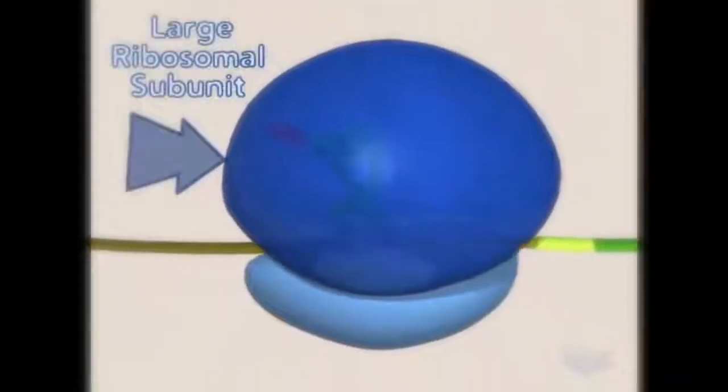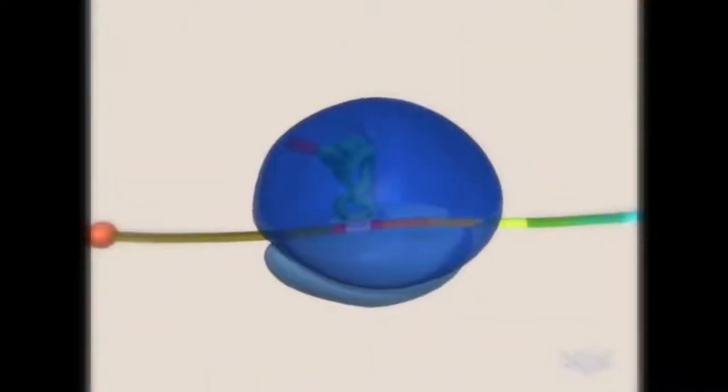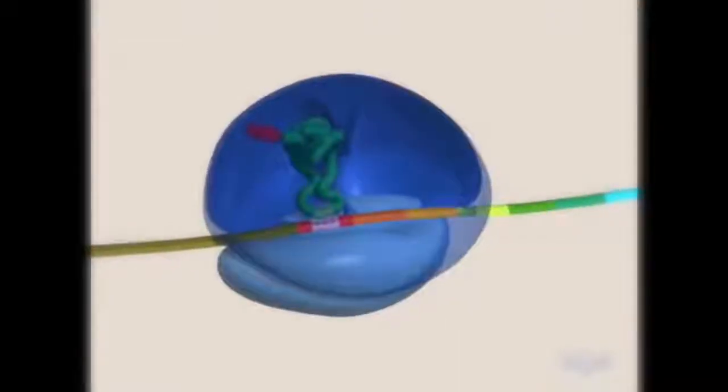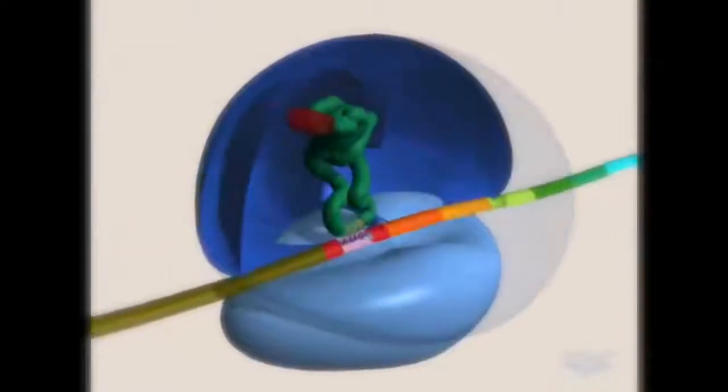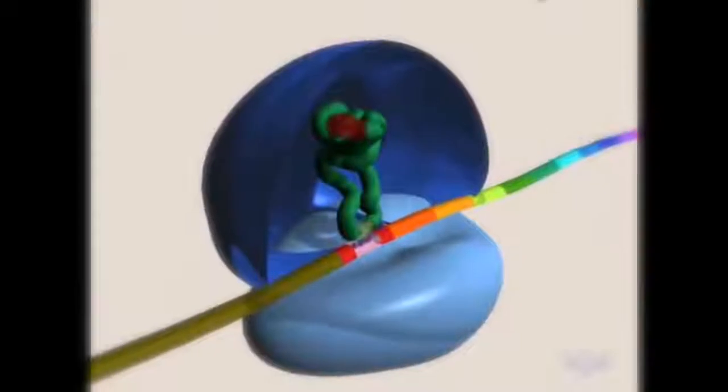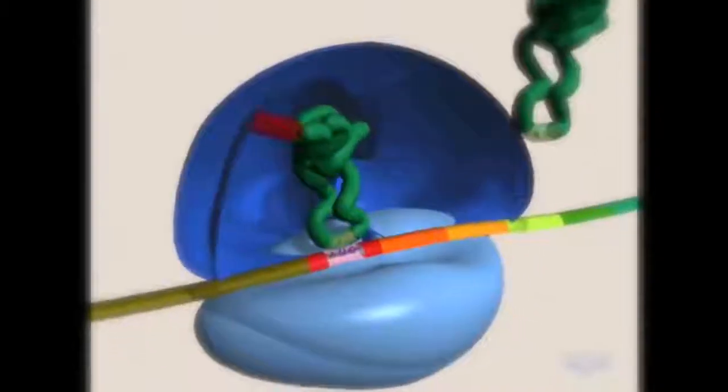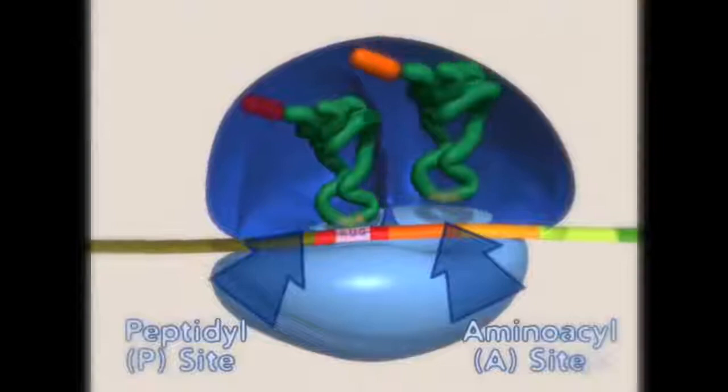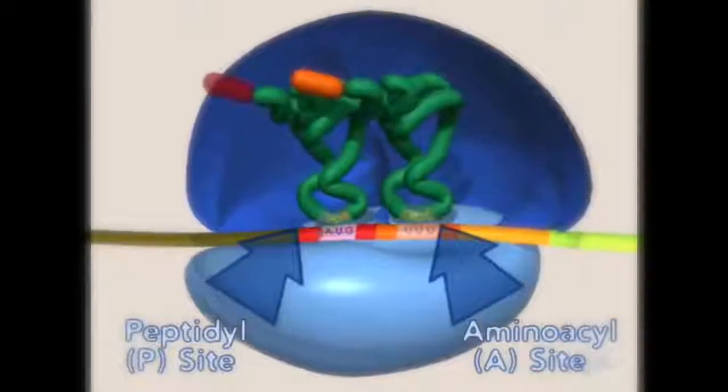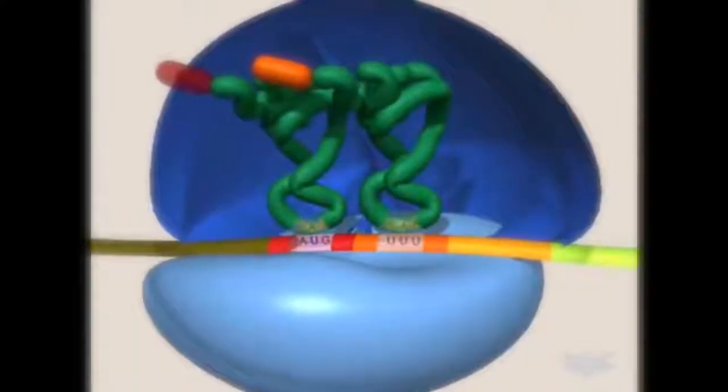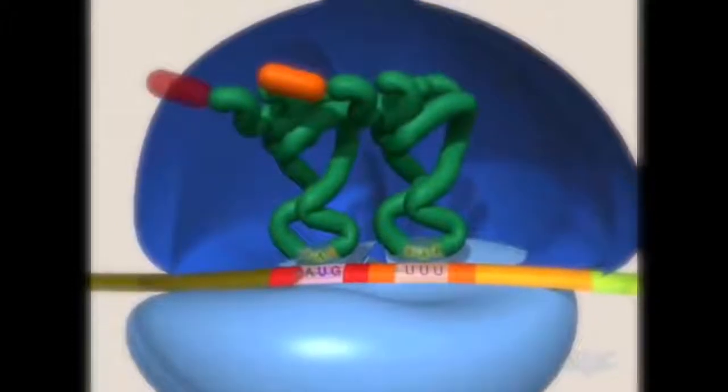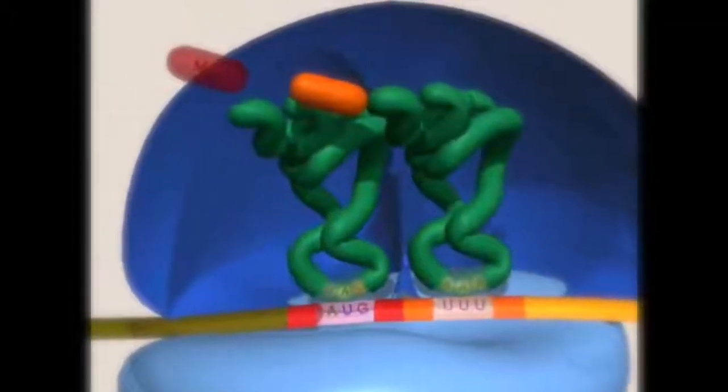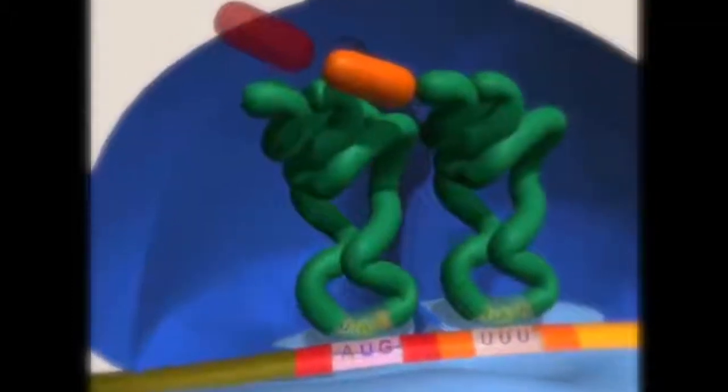The large subunit of the ribosome now binds to create the peptidyl, or P-site, and the aminoacyl, or A-site. The first tRNA occupies the P-site. The second tRNA enters the A-site and is complementary to the second mRNA codon. The methionine is then transferred to the A-site amino acid.